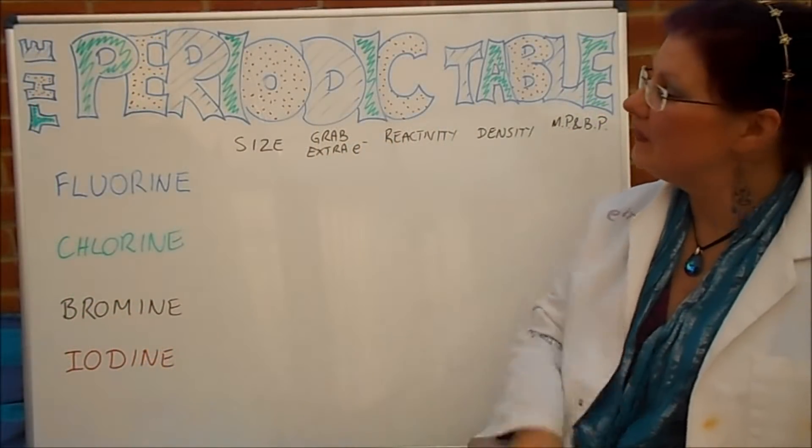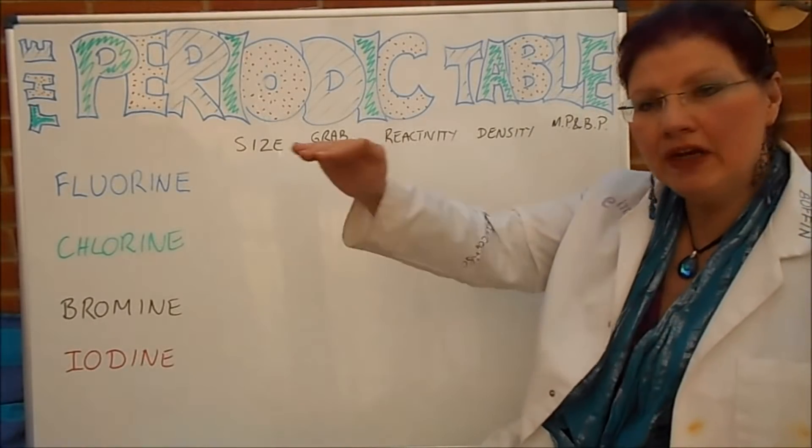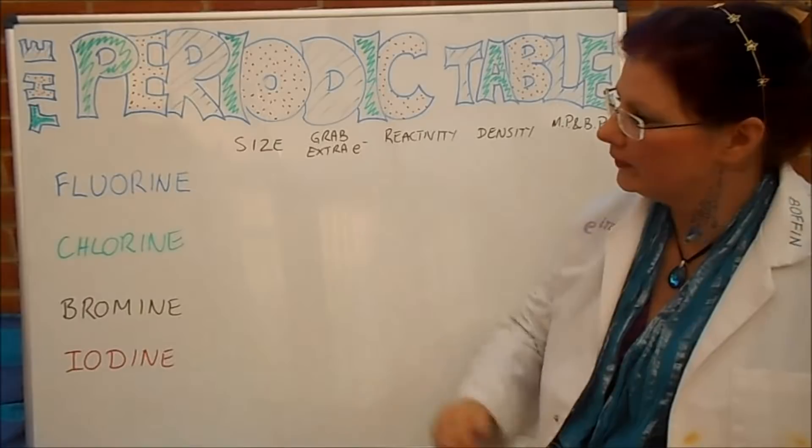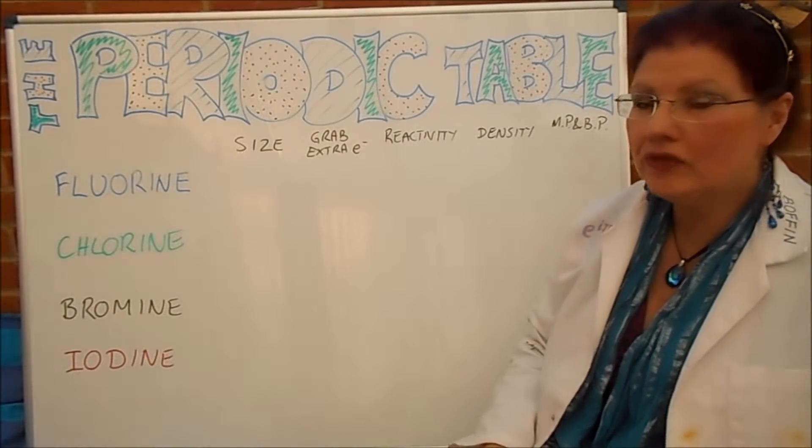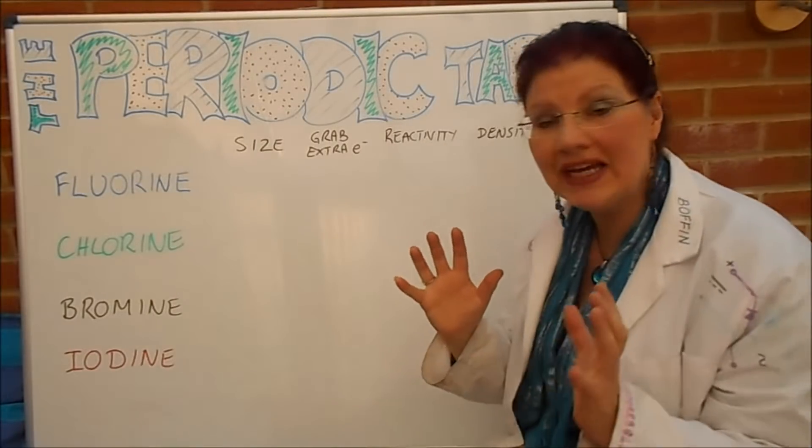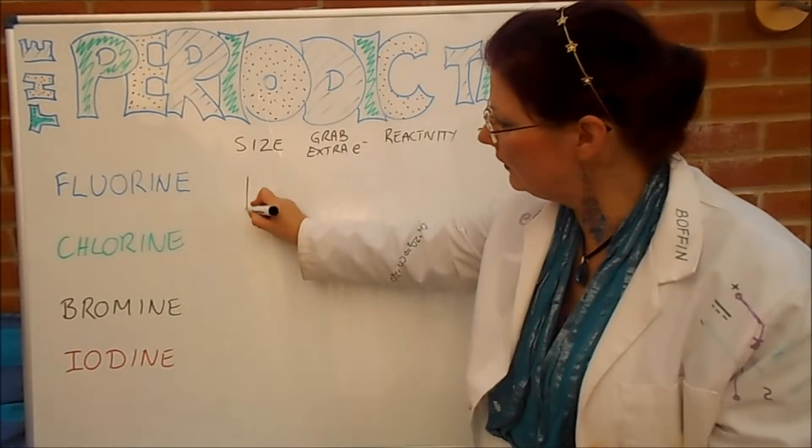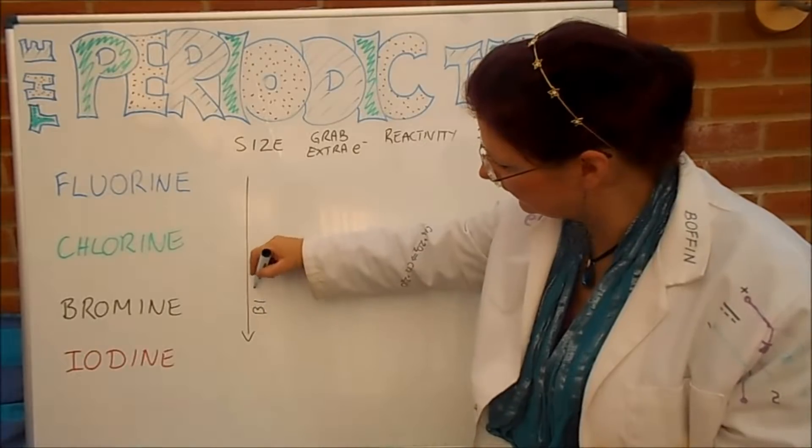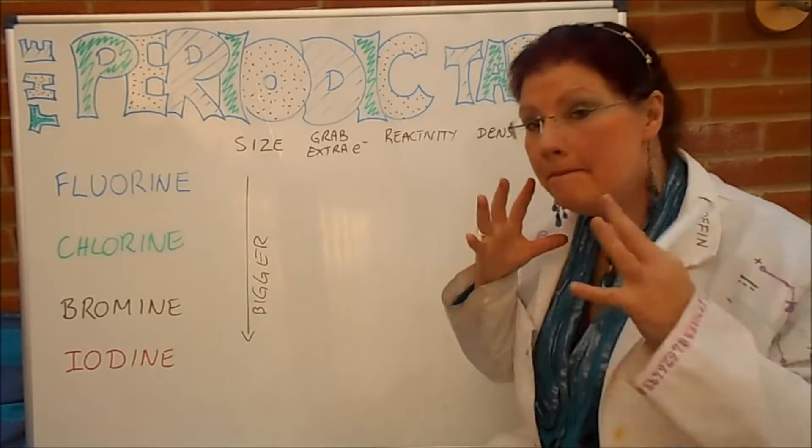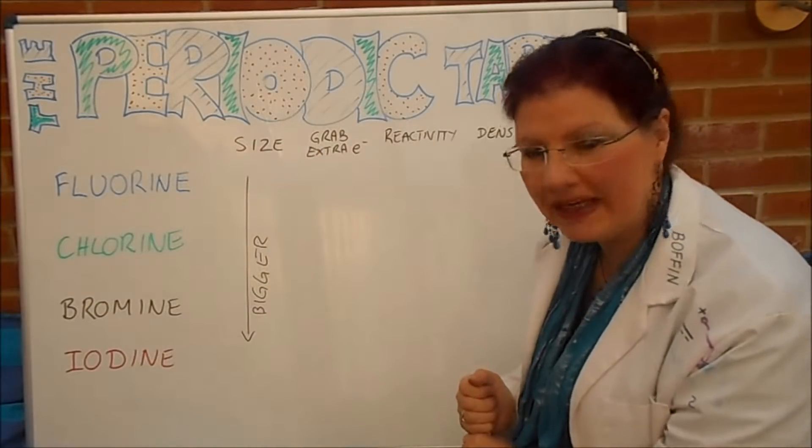Right, let's have a talk about some of these. First one is very easy: the size. Fluorine is in period two, that means the second layer down on the periodic table, which means it has two shells of electrons. Chlorine is on the third layer down, so it has three shells of electrons. Fourth layer down, four shells and fifth layer down, five shells. So as we go down, they get bigger. As we go down the table, they get bigger, so they're physically bigger atoms. Fluorine is quite a small atom, iodine is quite a big atom.